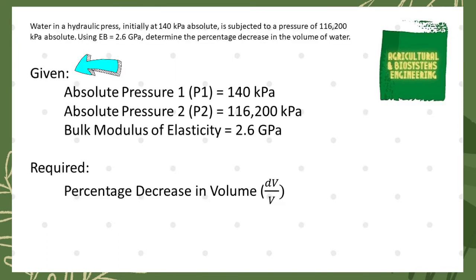The first thing we need to do is determine our given. First, our first absolute pressure of 140 kPa. Next, our second absolute pressure of 116,200 kPa. And third, our bulk modulus of elasticity of 2.6 GPa.